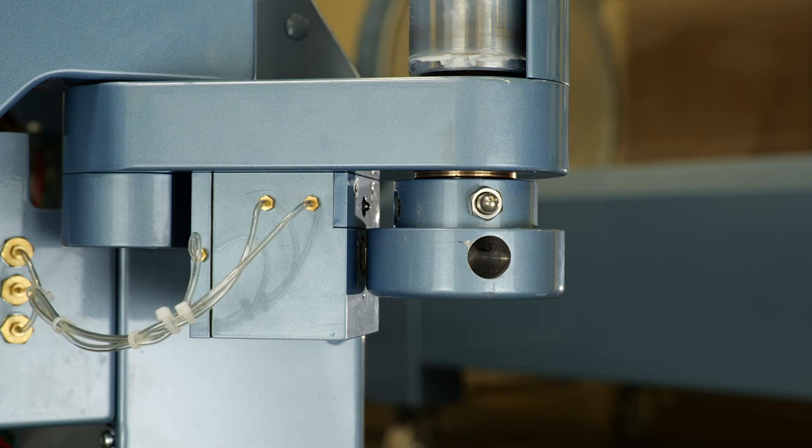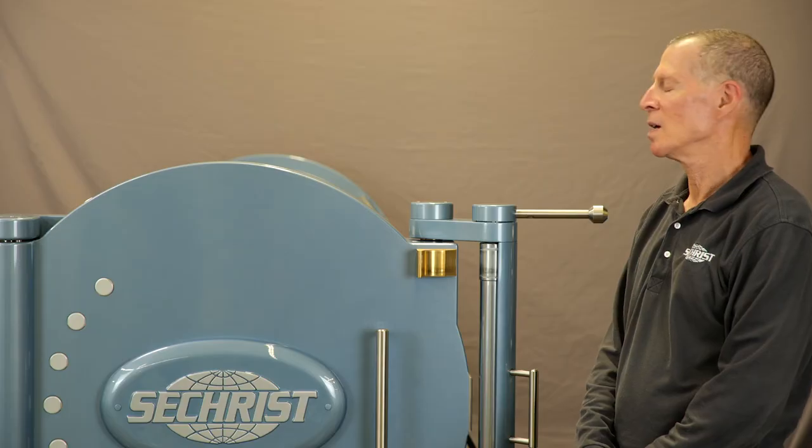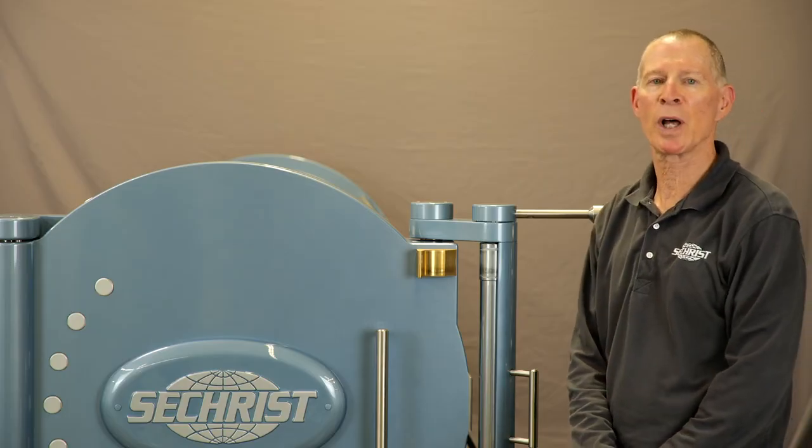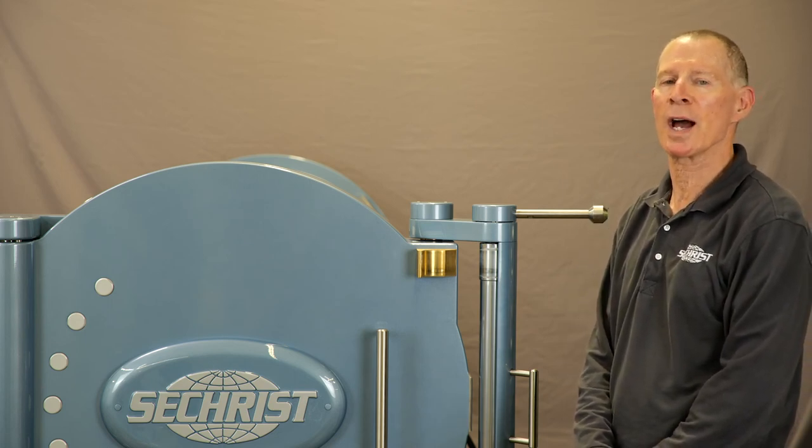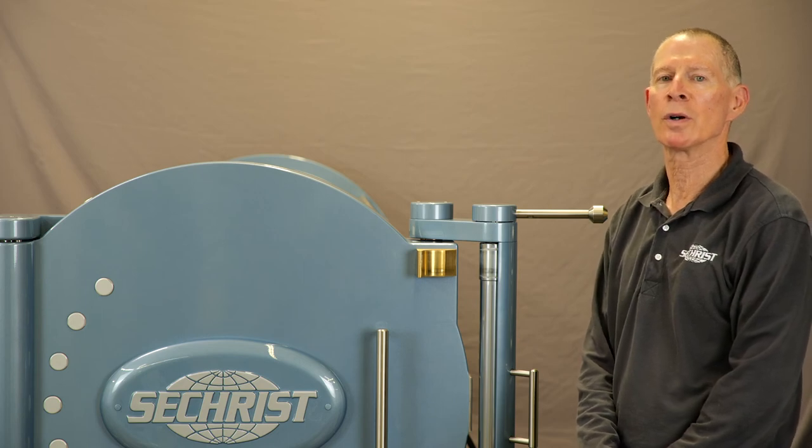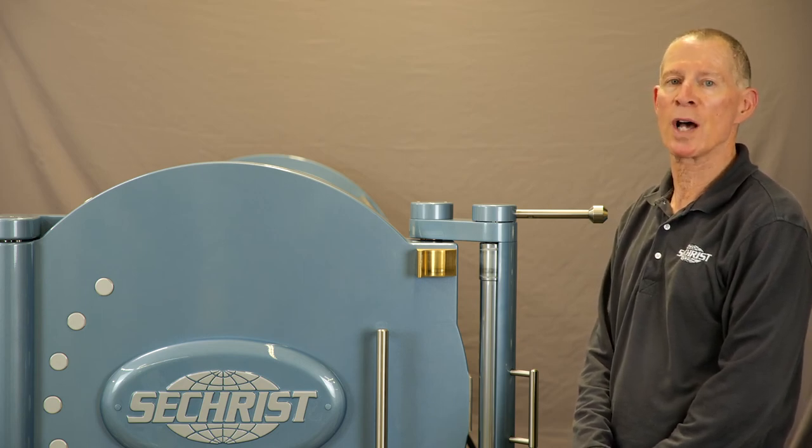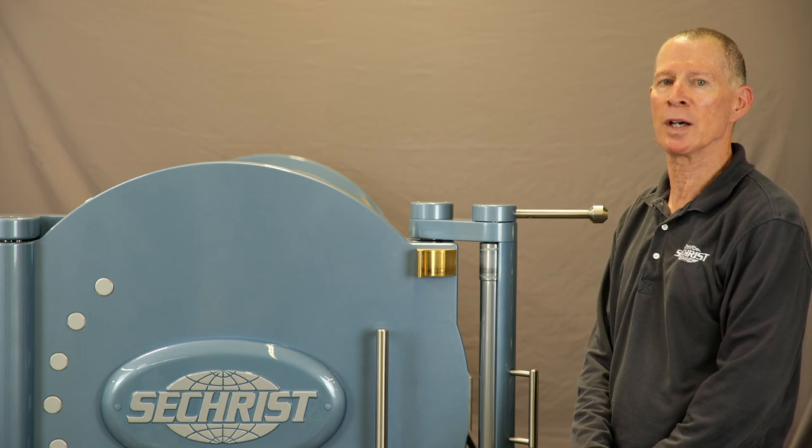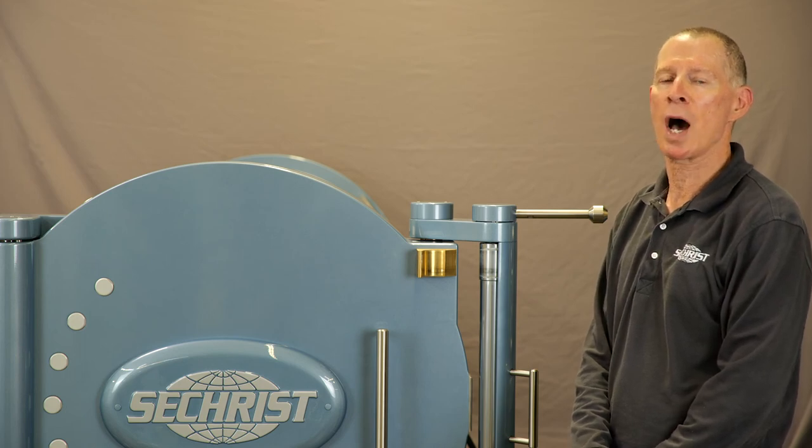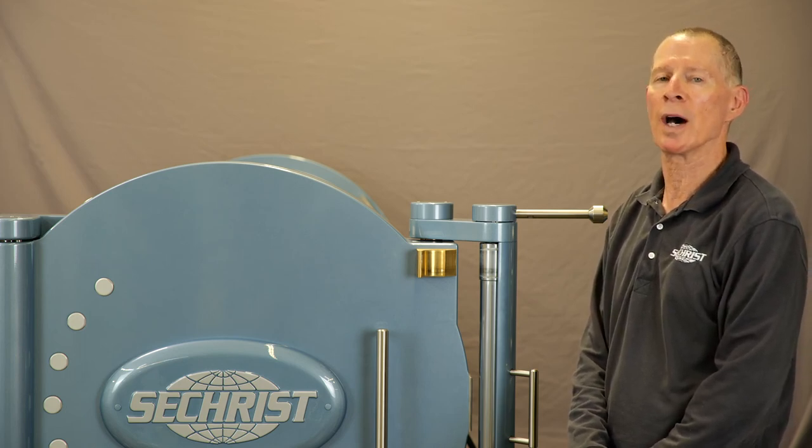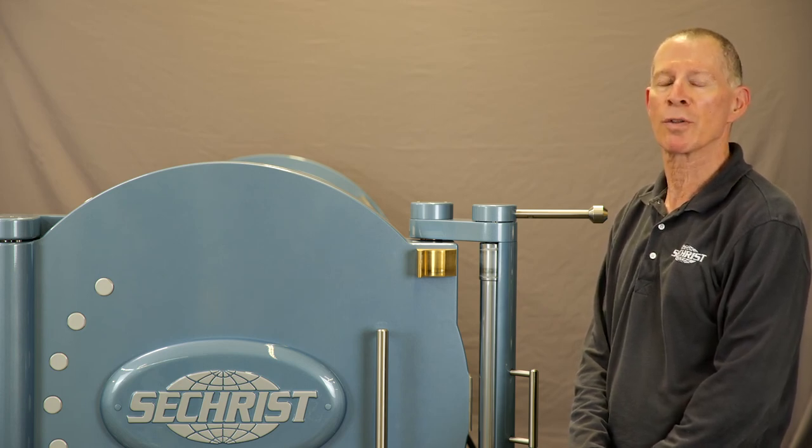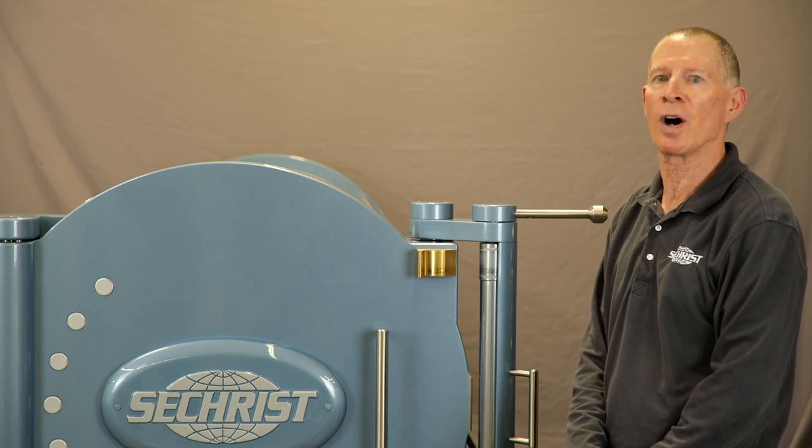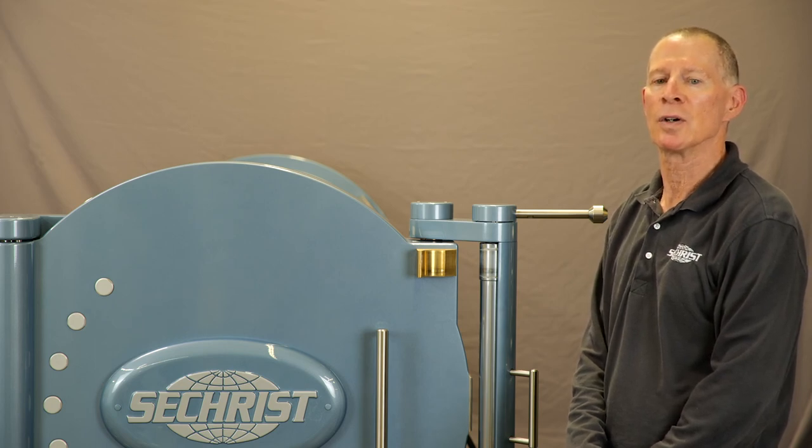Now what we need to do is we actually need to close the chamber up and pressurize it. Now we have our three-way replaced, everything is aligned. We're down to our final verification, and that is actually closing the chamber door, turning the chamber on, pressurizing it, and verifying that the safety pin does come out and engage the hockey puck so that the door cannot accidentally be opened while the chamber is pressurized. We will do this three times just to verify that it is extending and retracting as it's supposed to.